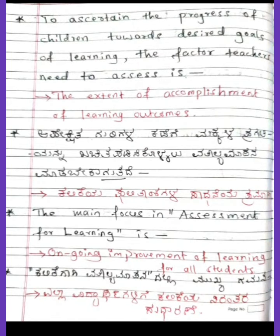To ascertain the progress of children towards desired goals of learning, the factor teachers need to assess is the extent of accomplishment of learning outcomes.